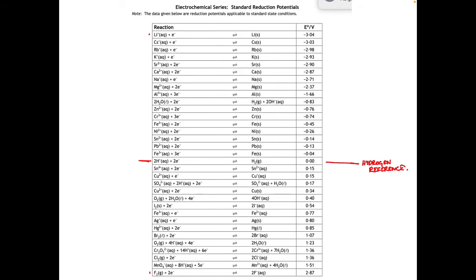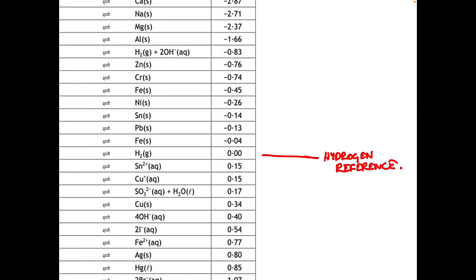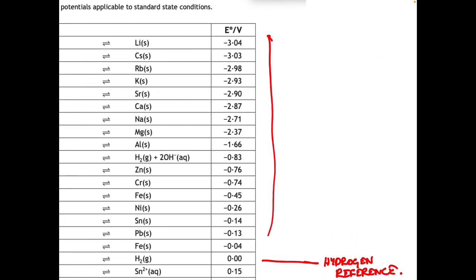At the top we've got lithium, and that happens to be the best reducing agent. The one at the bottom is Group 7, most electronegative. The one at the top, lithium, is least electronegative. That's why they're where they are on the electrochemical series — fluorine is the strongest oxidising agent and lithium is the strongest reducing agent. Going up the series: more powerful reducing agents — they are oxidised, so you write the equation backwards.